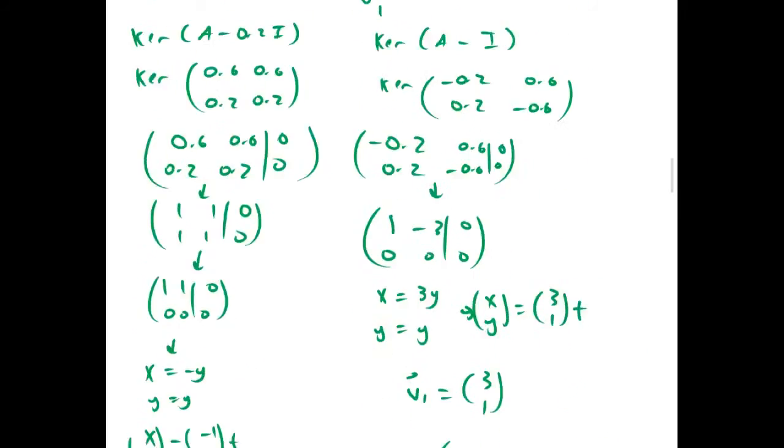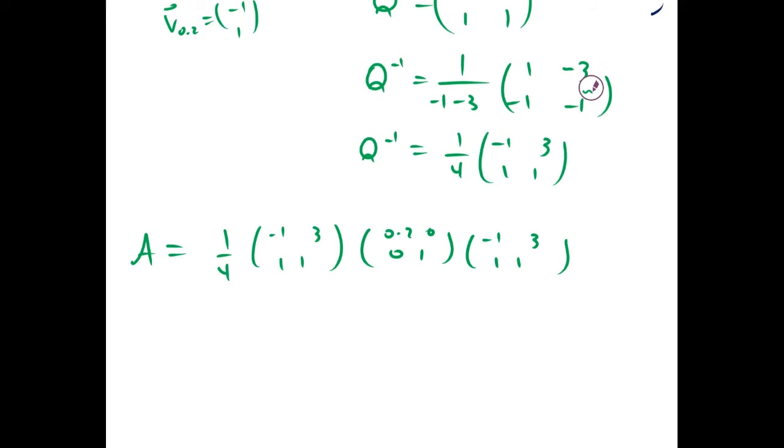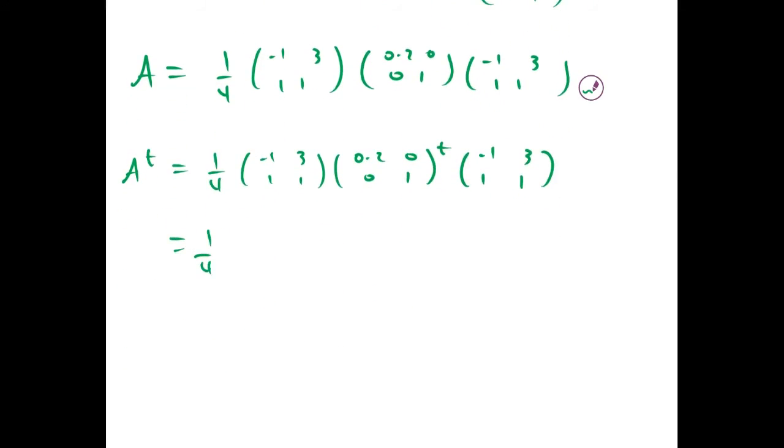Since A equals Q inverse D Q, we have A to the t equals (1/4)(-1, 3; 1, 1) times D to the t, which is (0.2^t, 0; 0, 1^t), times Q, which is (-1, 3; 1, 1).